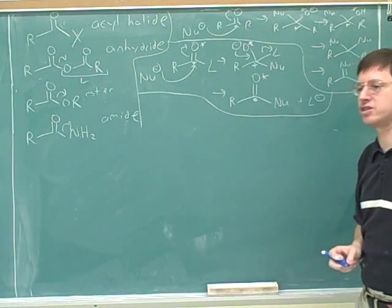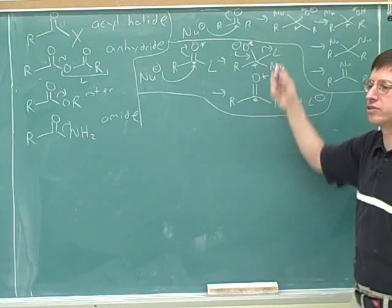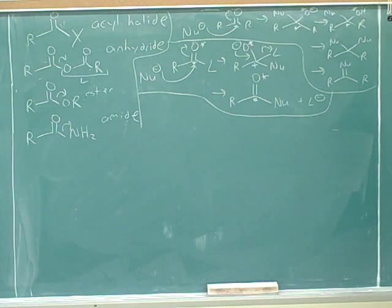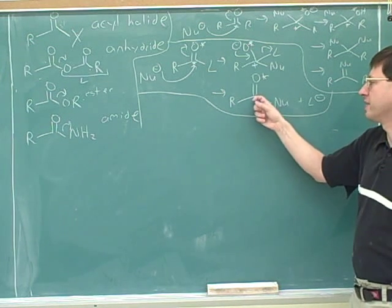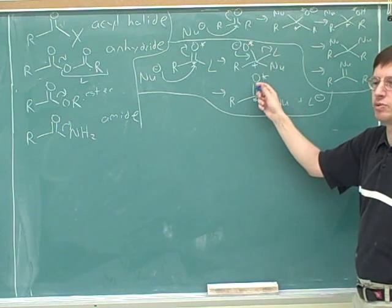In these reactions the carbonyl oxygen will not be completely kicked off because we want to reform the carbonyl. Instead we're going to kick the leaving group off. So it helps to keep asterisking the carbon that used to be the carbonyl carbon and the oxygen that used to be the carbonyl oxygen so we know what we need to reform over here.